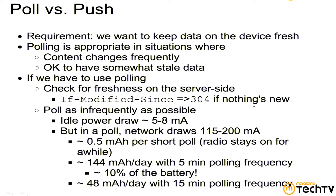Polling is okay when content changes very frequently and when we're okay with somewhat stale data. One thing we should try to do if we have to poll is check for freshness on the server side. The client — our Android app, assuming we're syncing through HTTP — should submit a request with 'If-Modified-Since', putting in the last timestamp we fetched data. The server then decides whether data is new and gives us only the new data, as opposed to needlessly downloading data we've already seen. We want to minimize the work done in a poll.